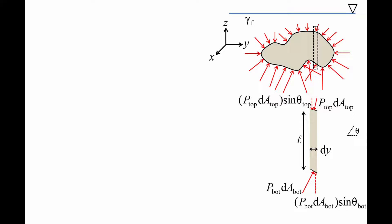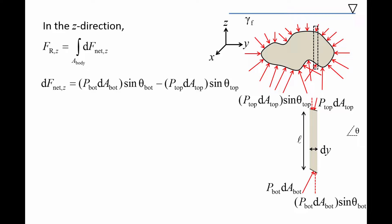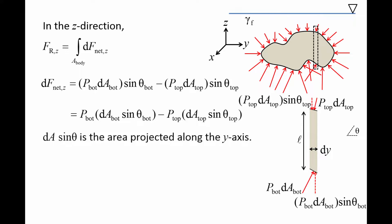Multiplying by sine theta gives the component of the pressure force in the z direction. In order to find the resultant pressure force in the z direction, we add up the net pressure force in the z direction at each sliver by integrating over the entire body's surface. The net pressure force in the z direction acting on each sliver is the pressure force from the bottom minus the pressure force from the top. Notice that both terms contain the quantity dA times sine theta, which is the area projected along the y-axis. Since the width of each side is the same, the projected area of both sides is the same as well. That is, dA sine theta on the top is the same as dA sine theta on the bottom. For convenience, we will call this area dA proj.